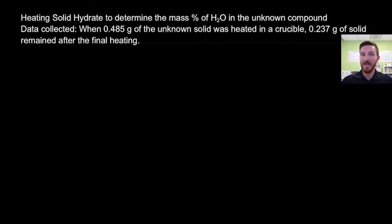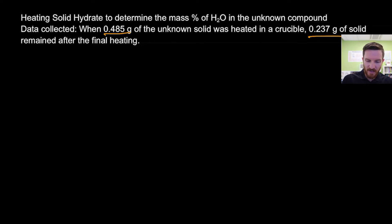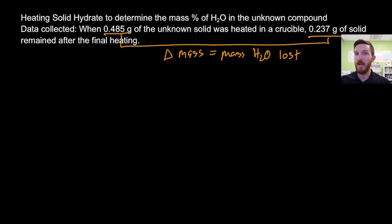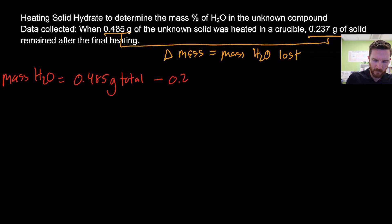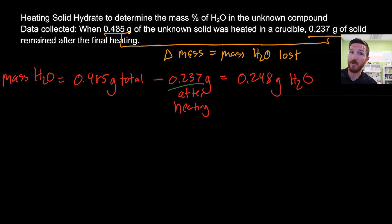Our next test is heating the hydrate to get rid of water. The water is attached to the solid compound, and as we heat it, the water goes away. We start with 0.485 grams of our unknown and heat it, leaving 0.237 grams remaining after the final heating. That difference in mass is going to be the mass of water lost — the mass of water that we originally had in our substance. So: 0.485 grams minus 0.237 grams gives us 0.248 grams of water.